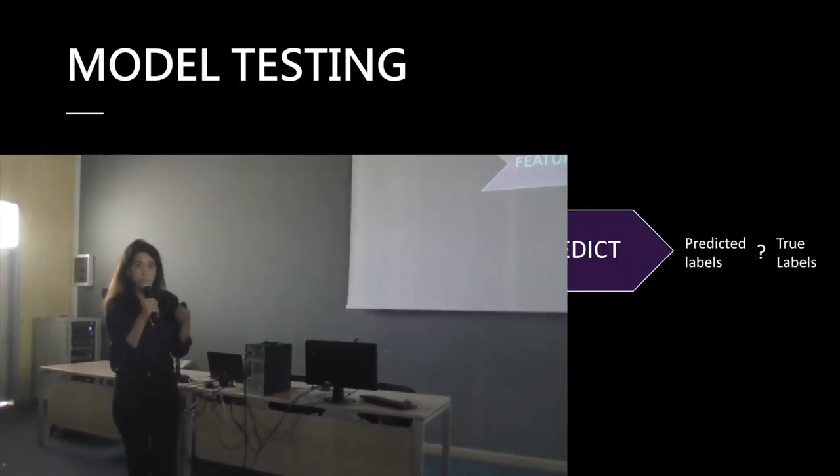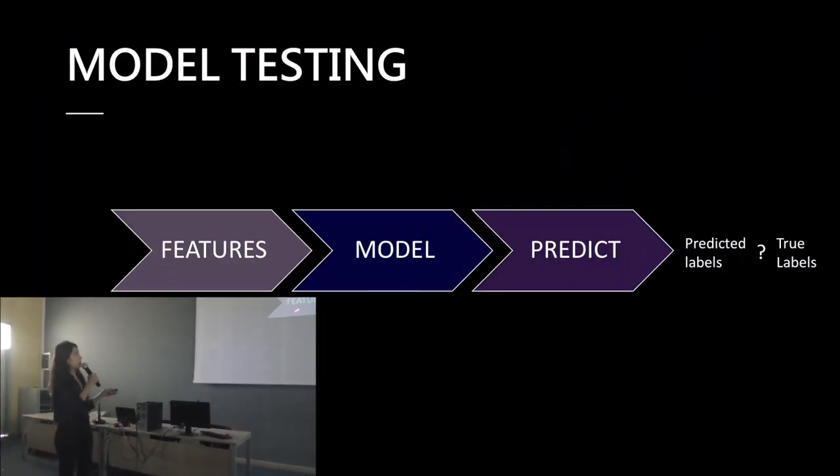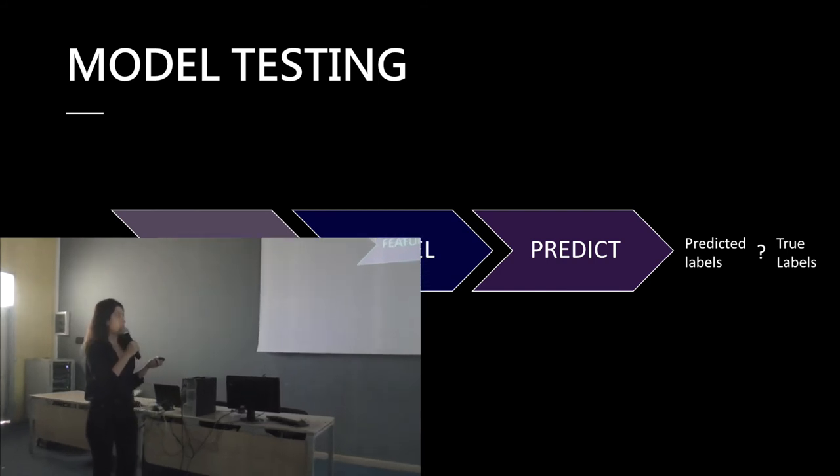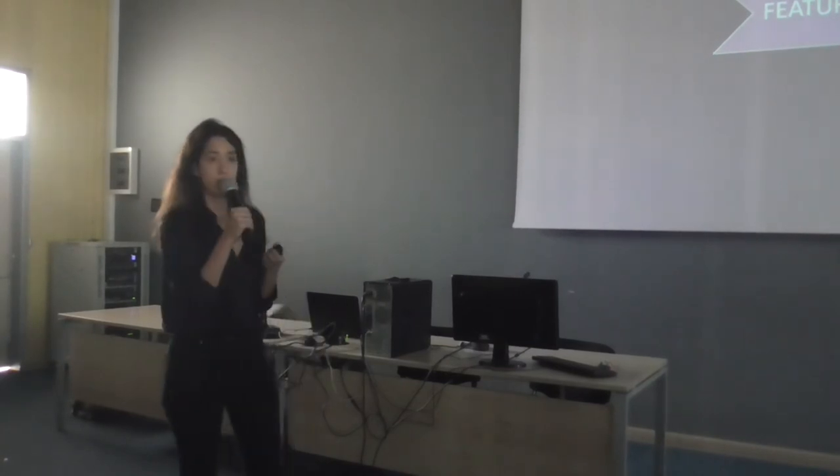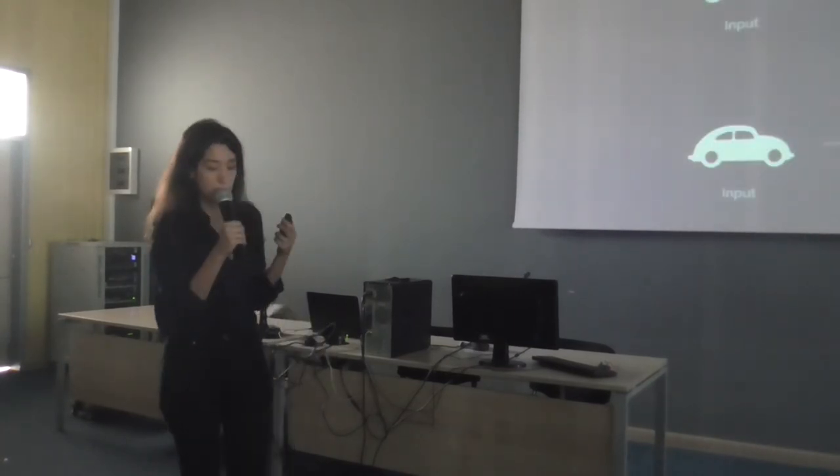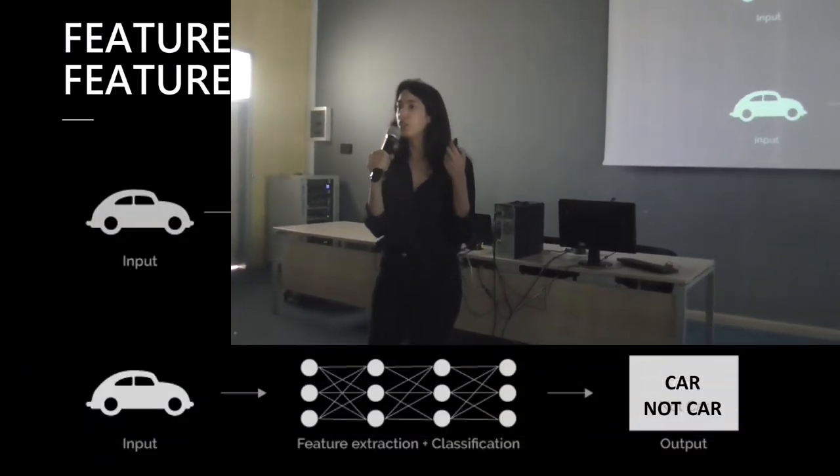This is the training part. Now, the testing part. So, for the testing part, it looks very similar. We put into the model our features, which are our examples, and the model makes a prediction. But now, we don't have this feedback anymore. We don't have this loss function anymore. We just predict the labels. And if we're testing the models, and we have true labels, we can compare these two labels, and draw conclusions on how well our model behaved. This is a very general view of solutions of machine learning.